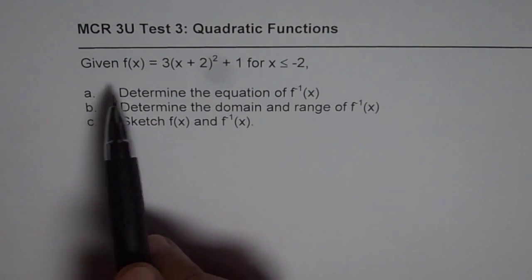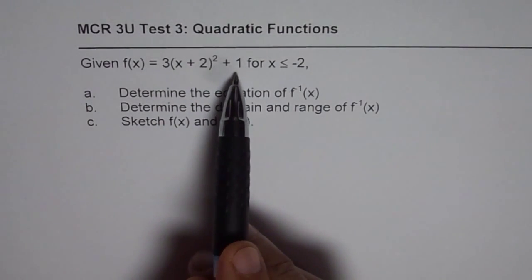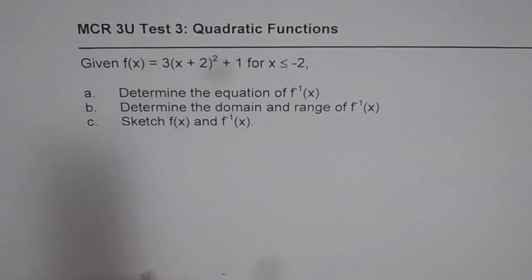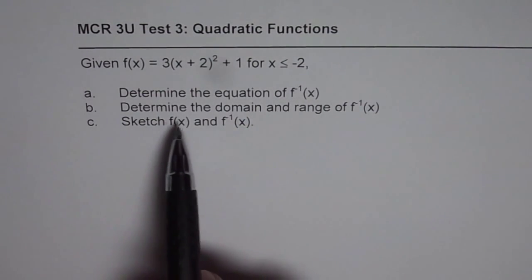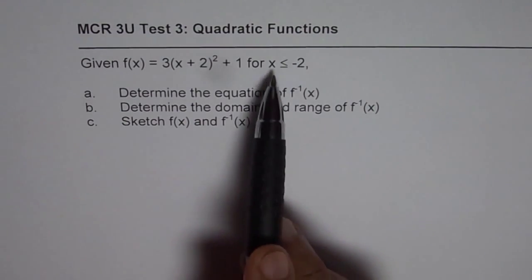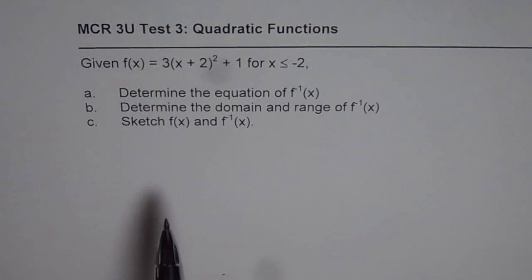Question is, given f(x) = 3(x + 2)² + 1 for x ≤ -2, determine the equation of f inverse x, determine the domain and range of f inverse x, and sketch the function f(x) and f inverse x.